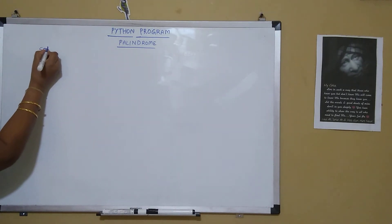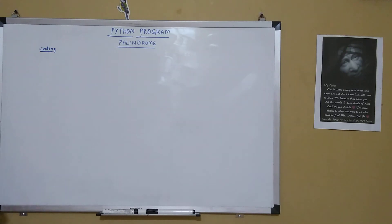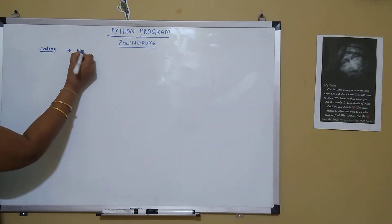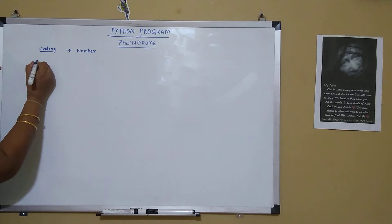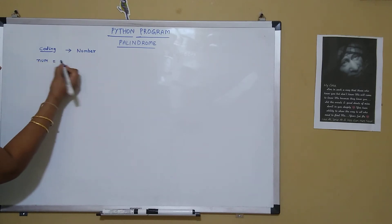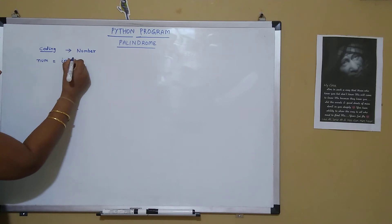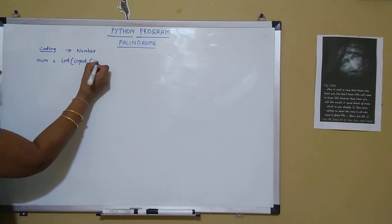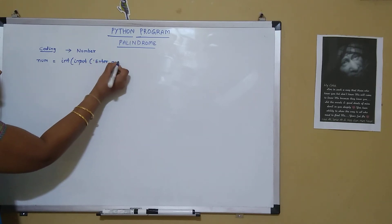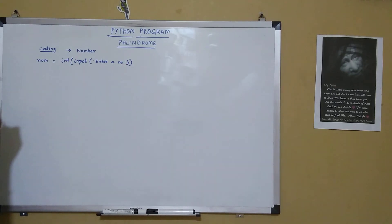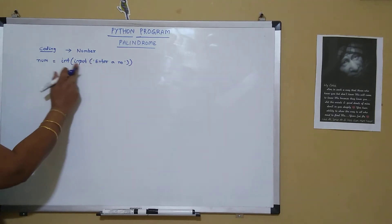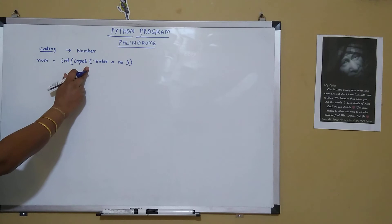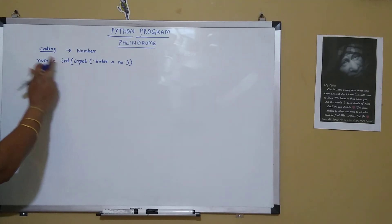The coding part covers how to find whether the string is palindrome and the number is palindrome. First, let's take the number concept — how to find that the number is palindrome. We take: num = int(input('Enter a number')). It takes the data from the user, type converts it into integer, and stores it in num.